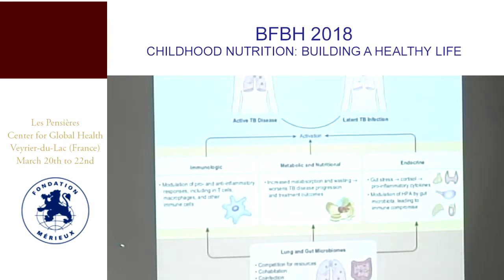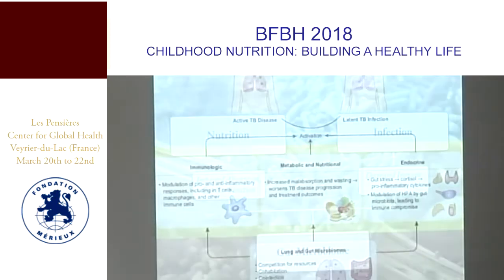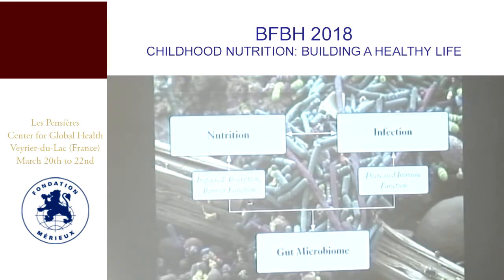We looked at the microbiome in the context of TB, motivated by metabolic abnormalities we observed at our field site. The mean BMI in this TB population was about 17.9 kg/m², so really undernourished, yet about 20% had diabetes and about 30% had pre-diabetes based on HbA1c. We started looking at how the gut microbiome might be modulating the risk of TB infection, examining immunological, metabolic-nutritional, and endocrine pathways — with modulation of pro- and anti-inflammatory responses, malabsorption, wasting, and the HPA axis.